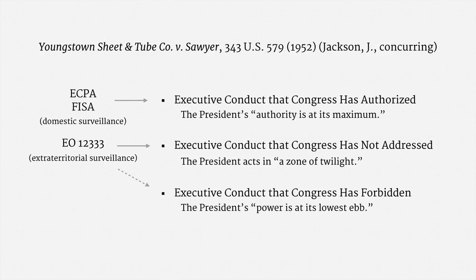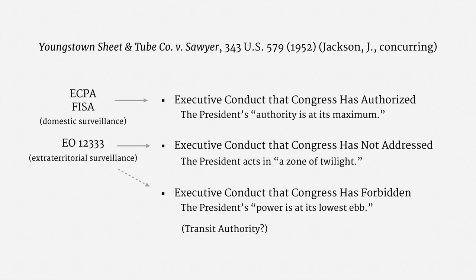But others were a valid exercise of Article II power. In the mid-2000s, the Bush administration moved away from this category. In modern practice, there appears to be maybe just one program that still operates in this category. The Executive Branch calls it Transit Authority, and it applies to international telecommunications traffic that happens to pass through the United States. Very little is known about it.